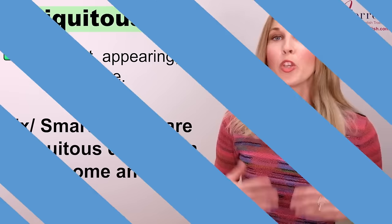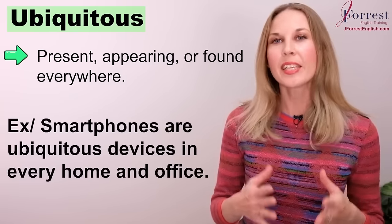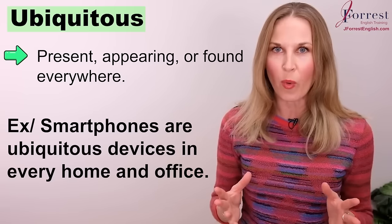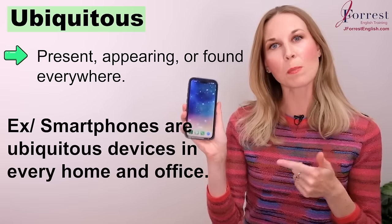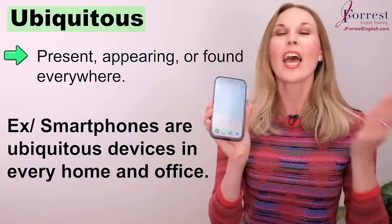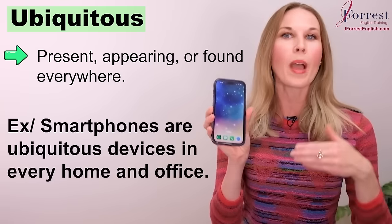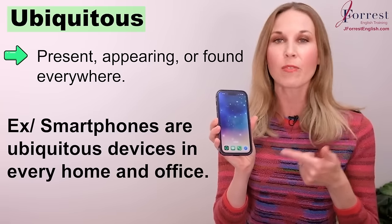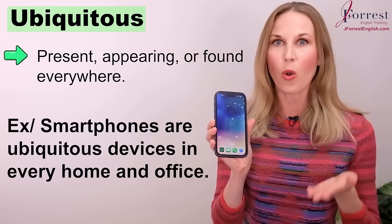So how'd you do with that quiz — was it easy, difficult? Don't worry if it was difficult, because now I'm going to explain each adjective in detail. Ubiquitous. This means present, found, or appearing everywhere. For example: smartphones are ubiquitous devices — they're found everywhere, in every home and every office. So we can say smartphones are ubiquitous devices in every home and office.